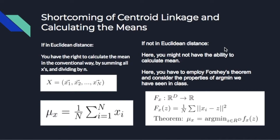In the beginning of the lecture, we talked about how it's very important to know what metric space you are in to pick the optimal clustering algorithm. With centroid linkage, here is an example of why that's important. If we are in the Euclidean metric space while using centroid linkage, calculating the mean is fairly trivial — we just use the equation shown. If we are not in Euclidean distance, however, it gets very difficult and we have to use something called Fréchet's theorem, which uses argmin in order to calculate an approximation of the mean.